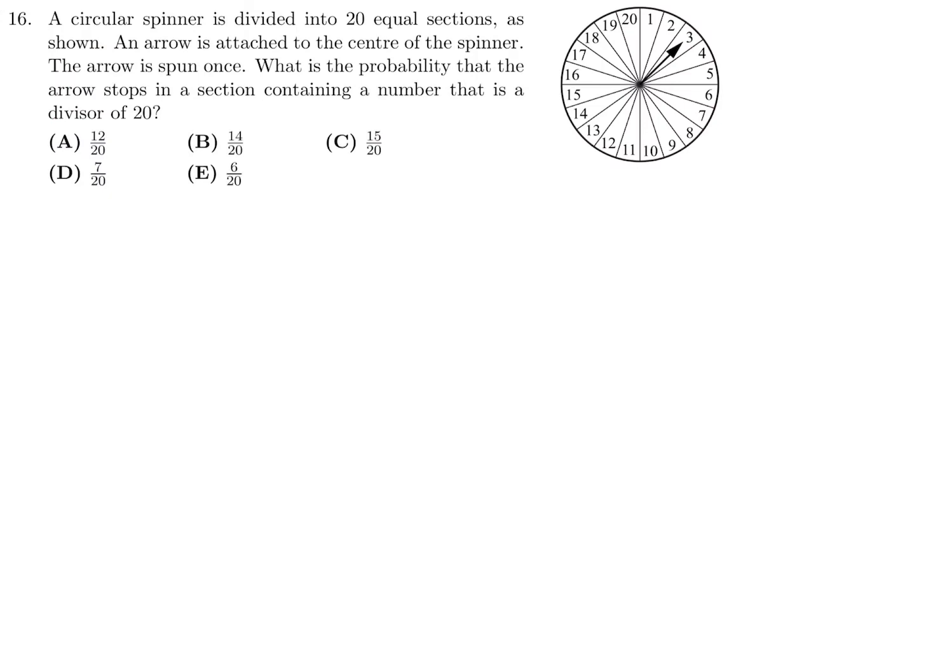Number 15, the answer is A. A circular spinner is divided into 20 equal sections as shown. An arrow is attached to the center of the spinner. The arrow spun once. What is the probability that the arrow stops in a section containing a number that is a divisor of 20? First, let's list what are the divisors of 20: 20, 10, 5, 4, 2, and 1. So there's six divisors and there's 20 numbers in this circle. So the probability is these six over the total, which is 20, and that's it.